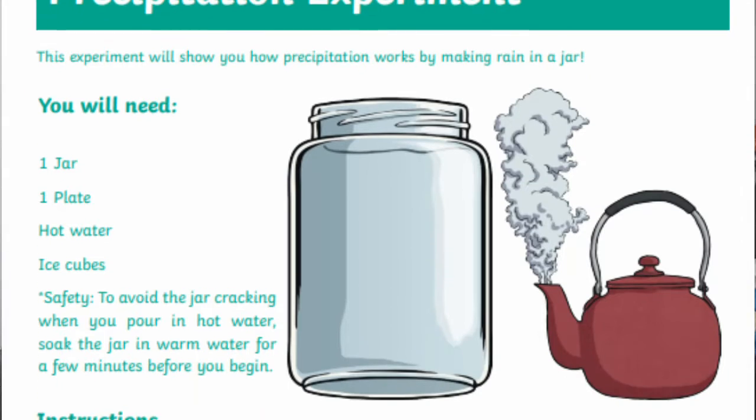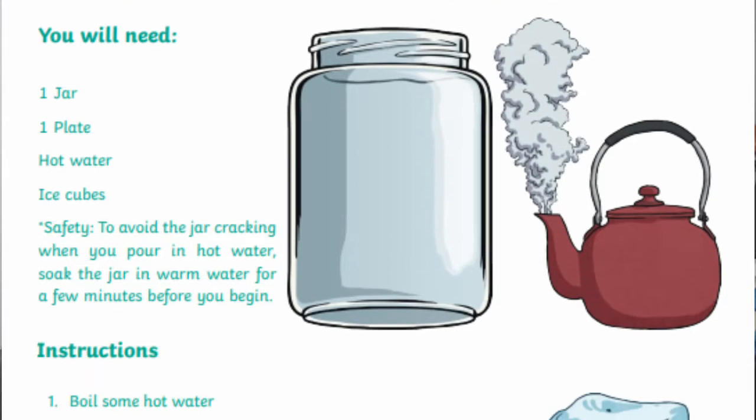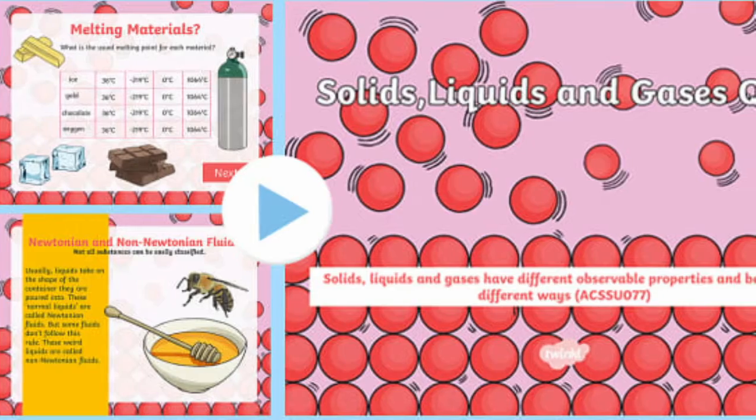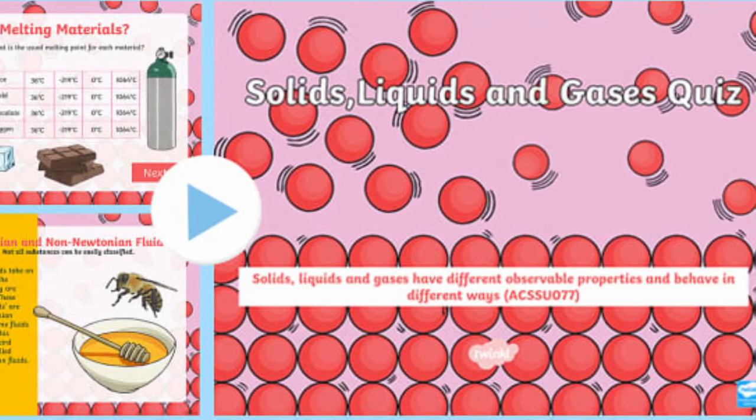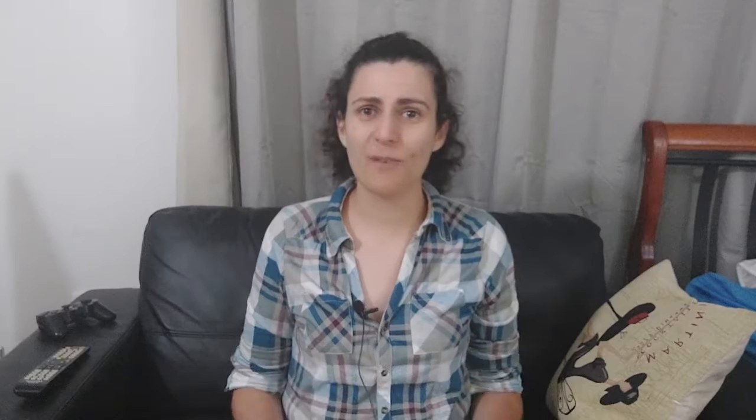There's also a precipitation experiment which you can do using a jar, hot water, a plate, and some ice cubes. Once children have a fairly good understanding of the different states of matter, they can test their knowledge using a quiz, which is a good way to consolidate learning.